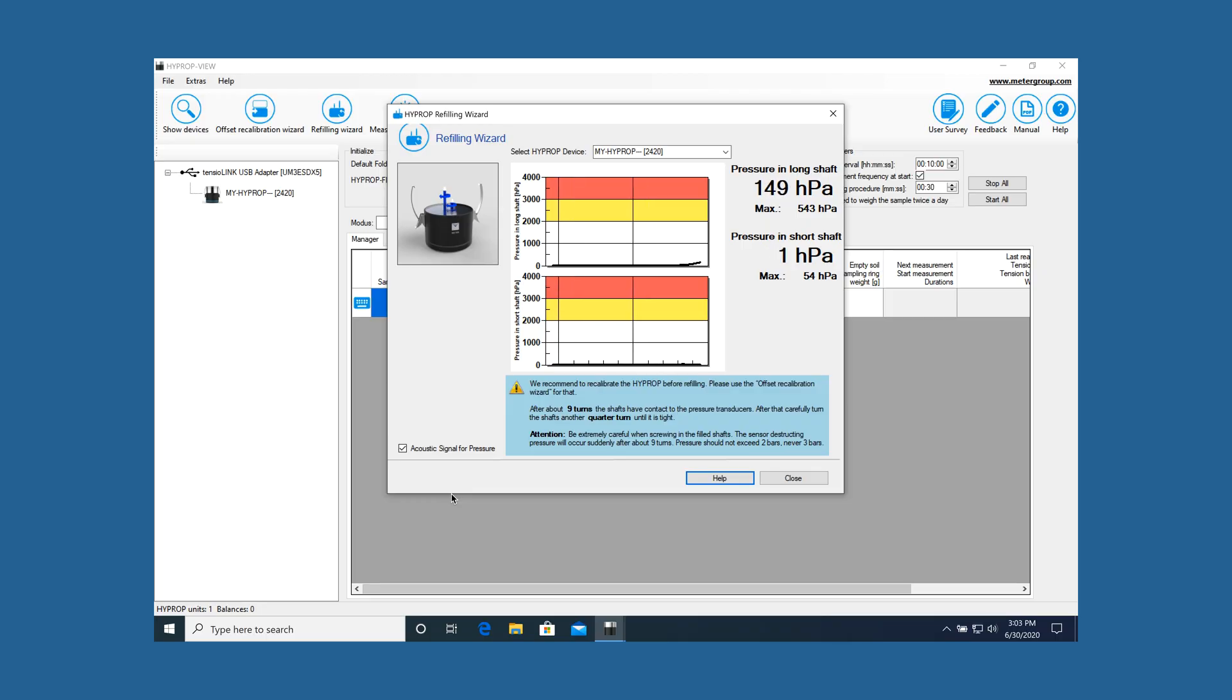Monitor the pressure display on the screen. The pressure should increase up to the atmospheric air pressure minus 1000 hectopascals or 100 kilopascals within 15 seconds.